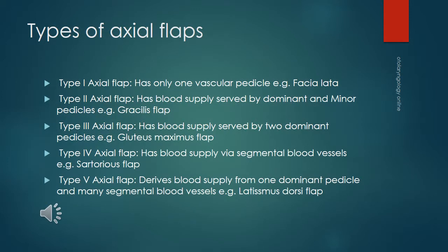There are five types of axial flaps classified according to blood supply. Type 1 has only one vascular pedicle, e.g. fascia lata. Type 2 has blood supply from dominant and minor pedicles, e.g. gracilis flap. Type 3 has two dominant pedicles, e.g. gluteus maximus flap. Type 4 has blood supply via segmental blood vessels, e.g. sartorius flap. Type 5 derives blood supply from one dominant pedicle and many segmental vessels, e.g. latissimus dorsi flap.